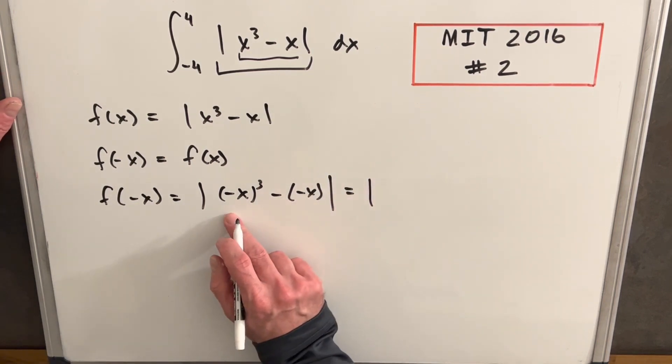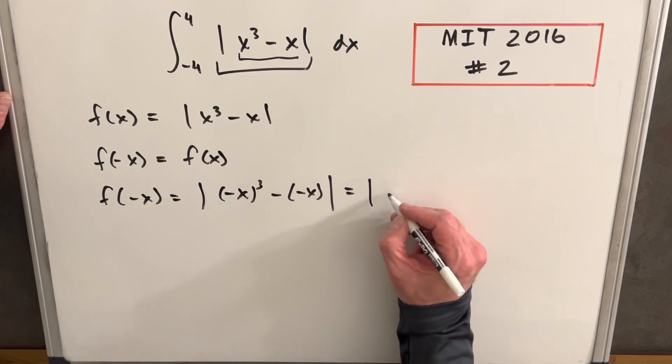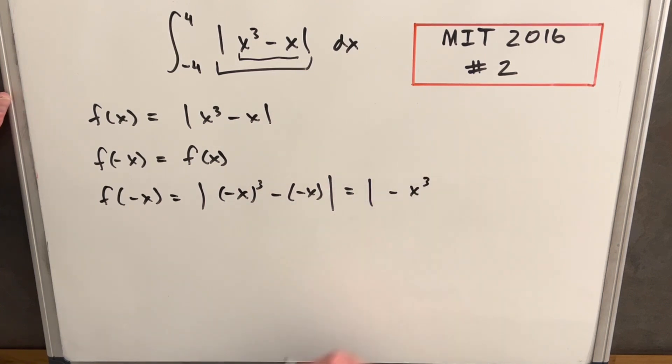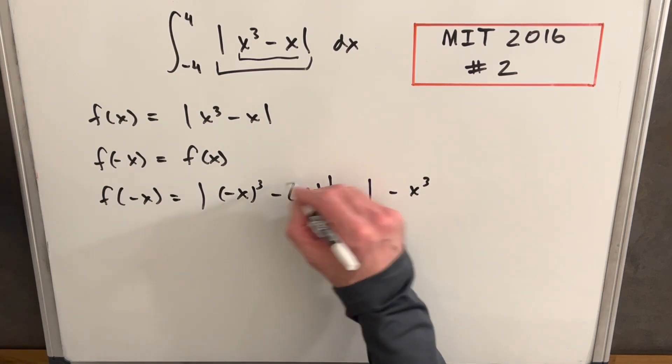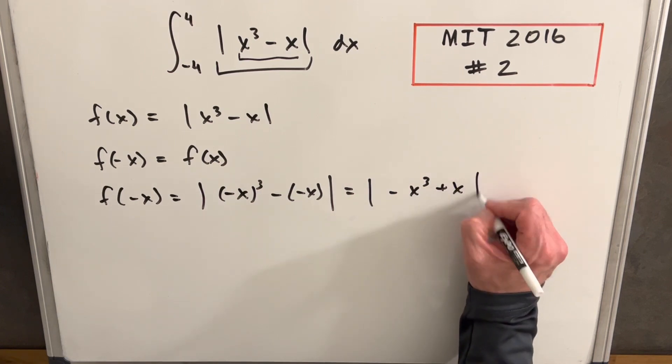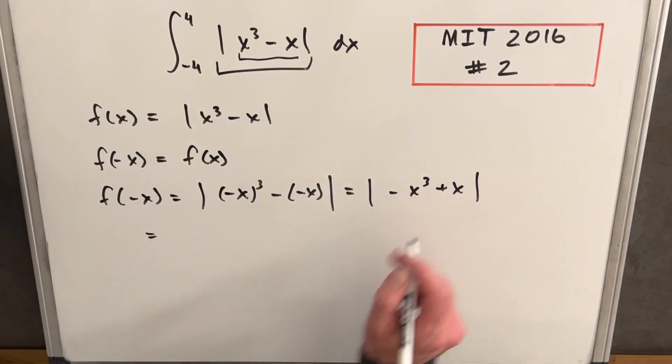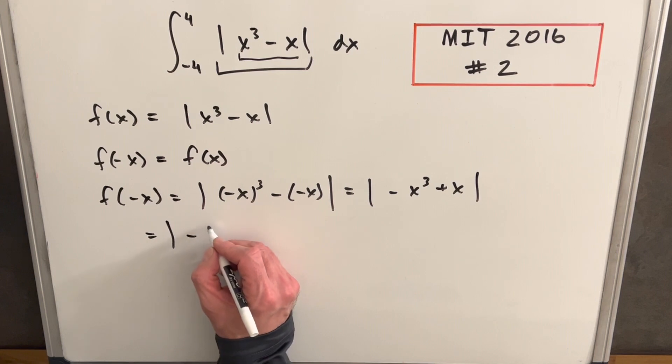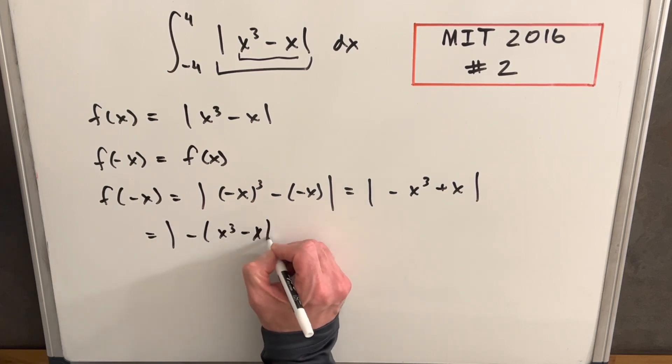So then when we cube out this, it's just going to be minus x cubed. And then we distribute in the minus sign here, we're going to have a plus x. But then we can factor out a minus from this, and we have x cubed minus x.